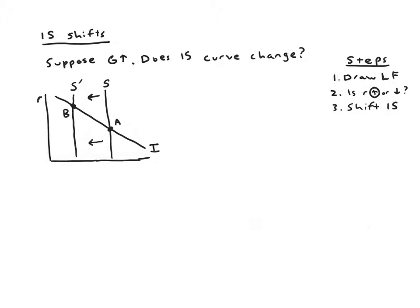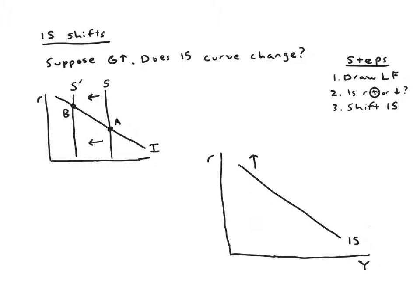That tells us how the IS curve should shift. Since the IS curve represents a collection of points relating R to Y, and our conclusion is that as G went up it leads to higher interest rates for any given level of income, the IS curve should shift vertically upward — higher interest rates for any level of Y. The new IS curve looks shifted up, which is the important conclusion, not how straight the line is.